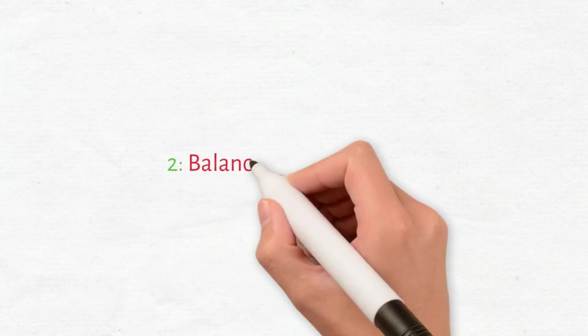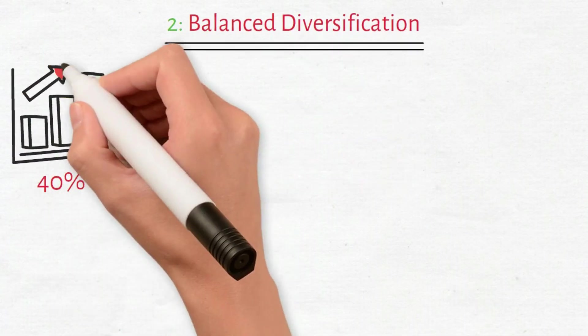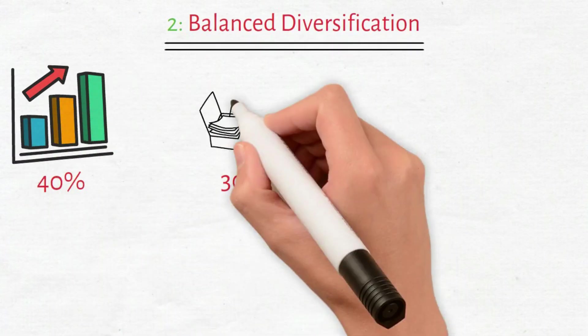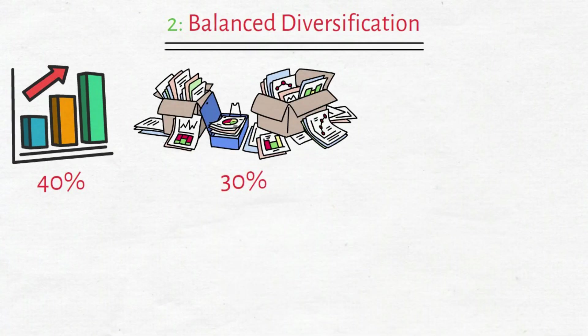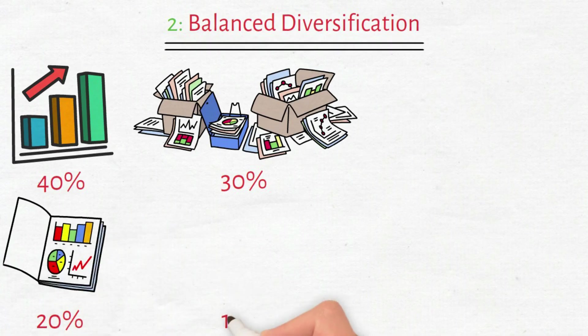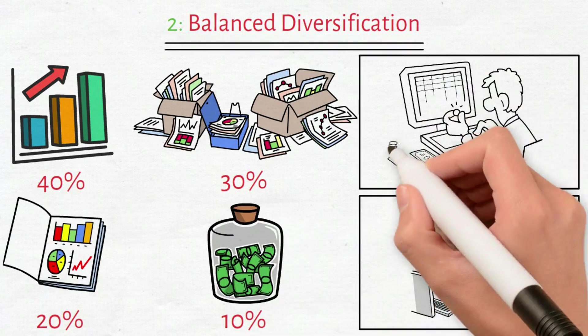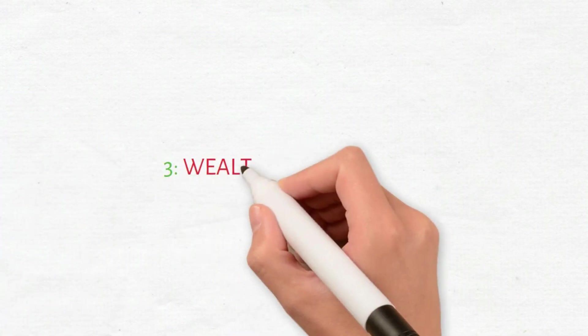The second strategy is balance diversification. Direct 40% of capital to SCHD for income growth. Allocate 30% to total market funds for broad exposure. Deploy 20% into small-cap value funds historically near decade-low valuations. Maintain 10% cash reserves for deploying during corrections. When panic triggers sell-offs, you purchase assets at bargain valuations.